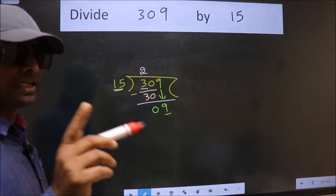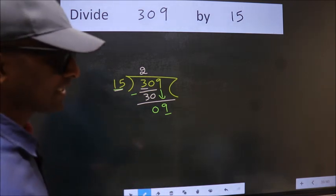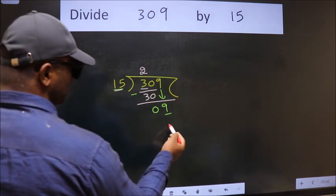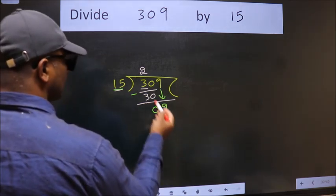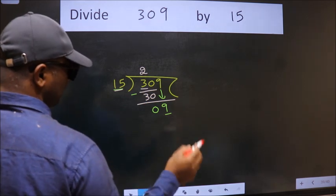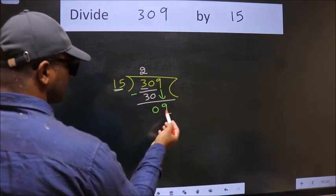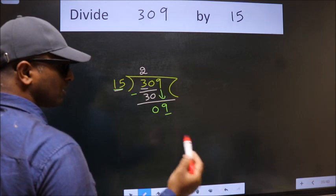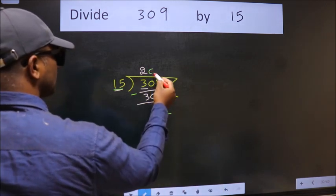Instead of that, what we should think of doing is which number should we take here. If I take 1 we get 15. But 15 is larger than 9. So what we do is we take 0 here.